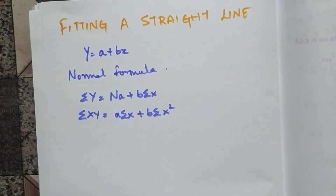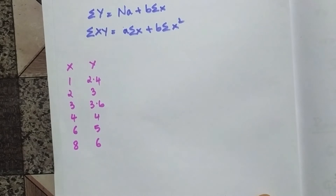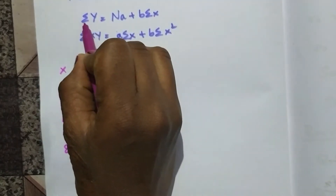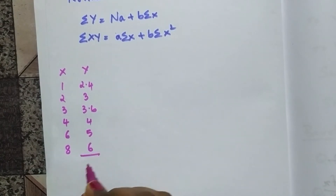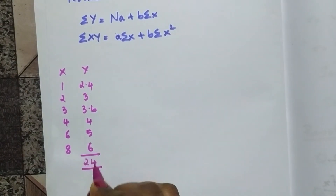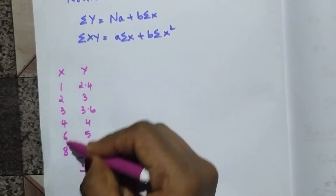There is also a formula for a second degree curve, also called a parabola, but in this video we'll be solving how to find a straight line. This is the question we are provided with. Looking at the formula, first we need summation y, which we get by adding the y values — after adding I get 24.